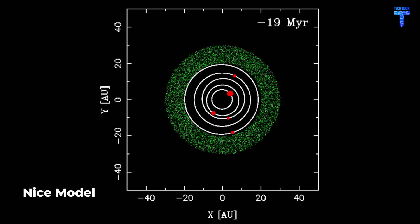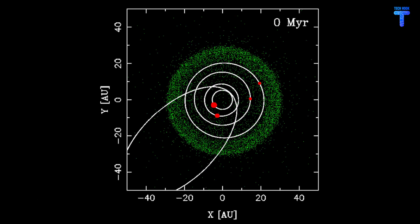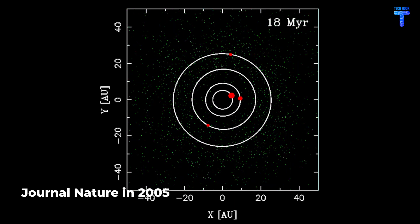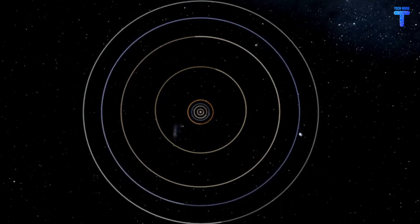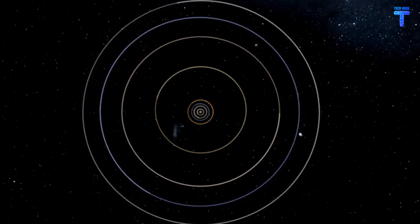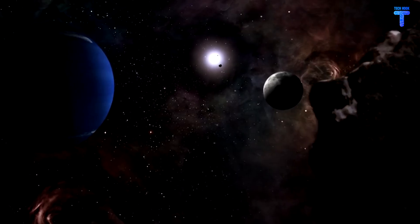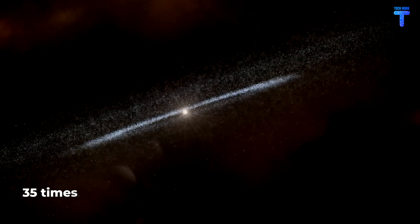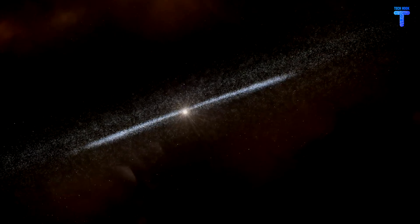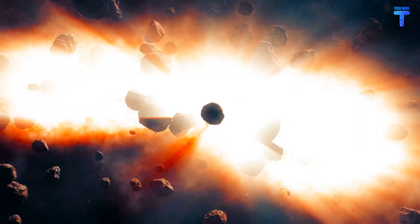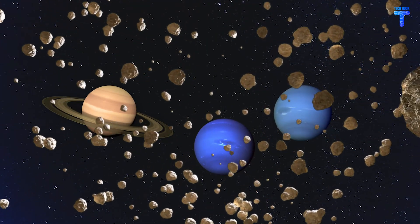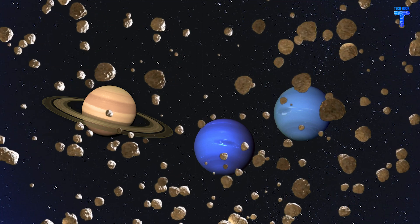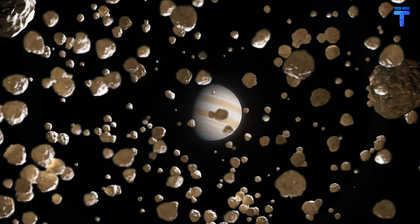However, the discovery of exoplanets upended everything by showing that at least some of the largest worlds might move through their surroundings. The NICE model, named after the French city where the researchers initially discussed it, was described in three studies that were published in the journal Nature in 2005. According to this hypothesis, the major planets were orbited in considerably more compact near-circular orbits in the early solar system than they are now. Just beyond Neptune's current orbit, a vast disk of ice and rocks encircled them, extending outward toward a distance of nearly 35 times the distance between the Earth and the Sun.